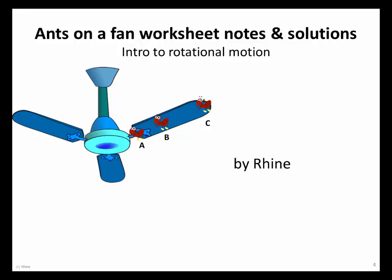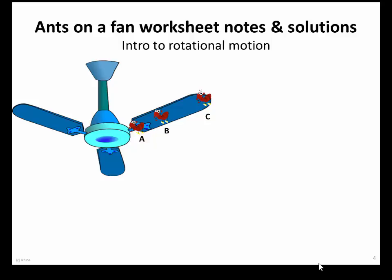Our next topic is rotational motion, and I have a little worksheet for you to work on called Ants on a Fan. After you do the worksheet on your own, we'll go through the solution and you should take notes. The whole purpose is for you to think about this on your own and use a little logic, a little circle geometry, and the formula speed equals distance over time to figure out some key concepts in rotational motion, some variables, and some relationships.